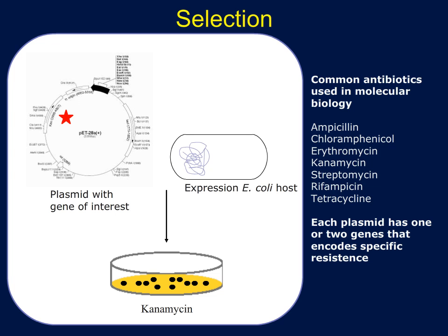Common antibiotics used are ampicillin, chloramphenicol, erythromycin, kanamycin, streptomycin, rifampicin, tetracycline, and many others. What's important to note is that each plasmid has one or two genes that encode a specific resistance. So when using a particular plasmid, you need to know which antibiotic you should use for selection.